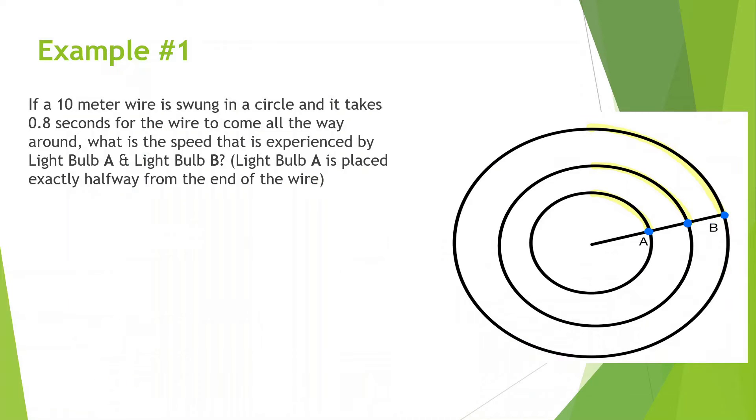Let's look at this example. If a 10 meter wire is swung in a circle and it takes 0.8 seconds for the wire to come all the way around, what is the speed that is experienced by light bulb A and light bulb B? Light bulb A is placed exactly halfway from the end of the wire. So we know this whole thing is 10 meters. Light bulb A is going to be 5 meters halfway.